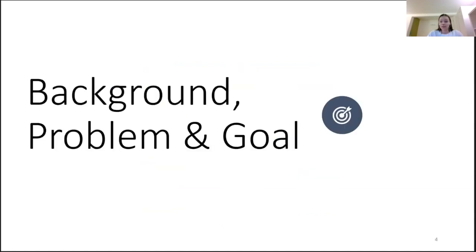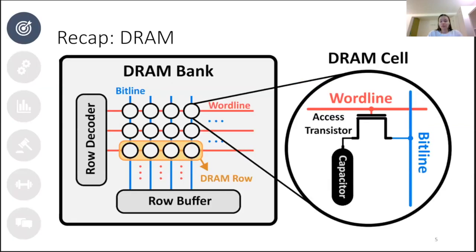Let's look at what rowhammer is and why it's necessary to find a good solution, starting with a recap on DRAM banks and cells. A DRAM cell encodes exactly one single bit of data — either zero or one — depending on the amount of charge in the capacitor. Unfortunately, DRAM cells, and more specifically the capacitor, leak charge over time, meaning they need to be refreshed periodically or we would lose important data.